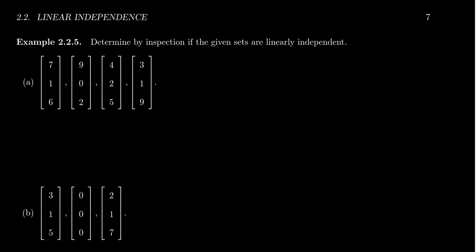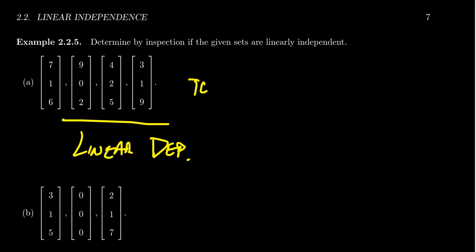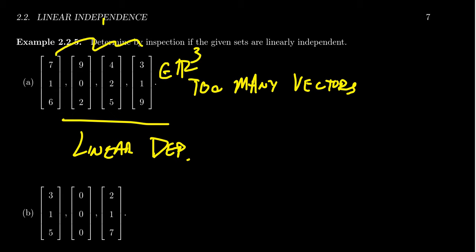Let's look at some examples where we can tell by inspection whether sets are linearly independent or not. The first one is linearly dependent—how do I know? Because there are too many vectors. No calculations necessary: these vectors all live inside R³, but there are four of them. The matrix is 3×4; there's no way there's a pivot in the fourth column after row reduction. So this is a linearly dependent set.